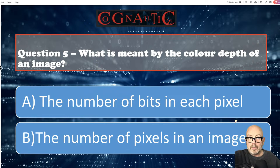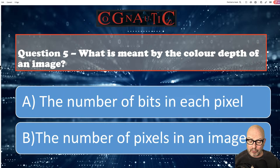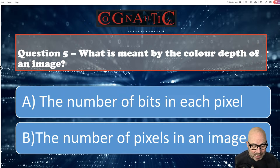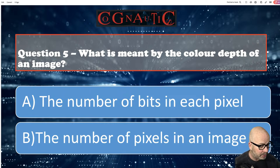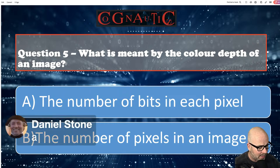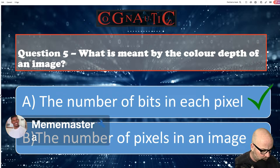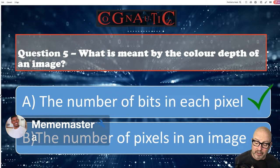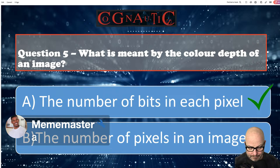What's meant by the colour depth of an image? Is it the number of bits in each pixel, or the number of pixels in an image? Dan's come straight back with A, and Meme Master said A as well. You are right — that is outstanding. And by the way, B — the number of pixels in an image — is resolution. So that's what we covered today.